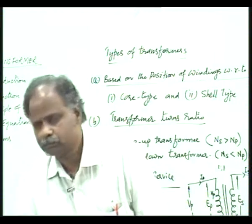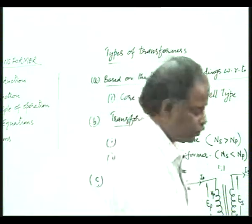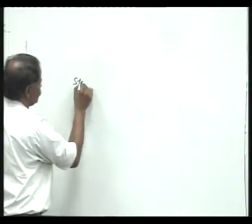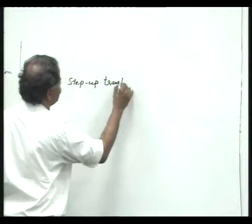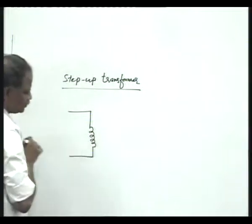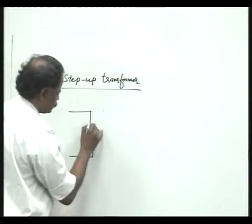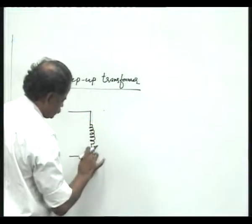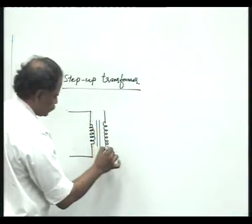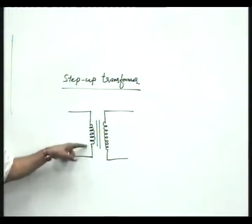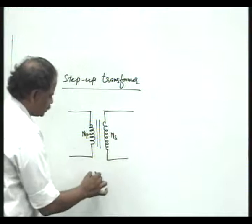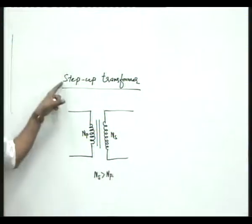Now if I want to show a step up transformer and a step down transformer symbolically — for a step up transformer, on the primary side we draw some number of turns and on the secondary side we draw more number of turns, with the two vertical lines representing the core in between. When you look at this diagram, the primary side has fewer turns and the secondary side has more turns, so Ns is greater than Np — that is why it is a step up transformer.